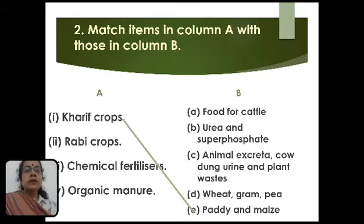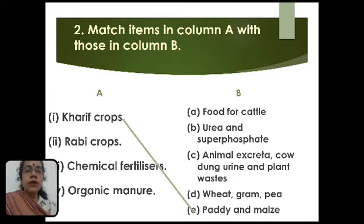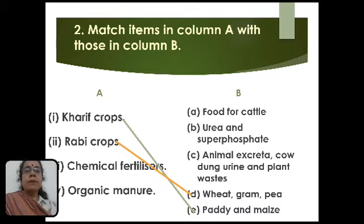Next is rabi crops — crops which grow in the winter season. In winter season, crops like wheat, gram, and pea can grow. So rabi crops will match with option D, that is wheat, gram, pea.